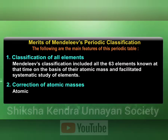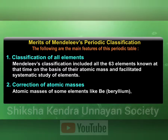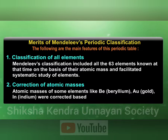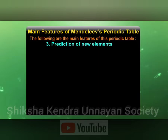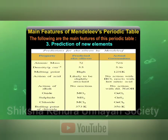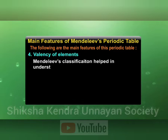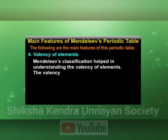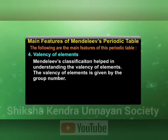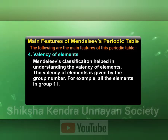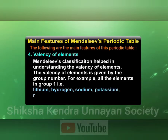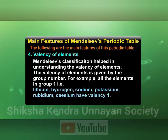Correction of atomic masses: atomic masses of some elements like beryllium, gold, and indium were corrected based on their position. Prediction of new elements: the table indicated different elements that could be new elements, representing Mendeleev's prediction of undiscovered elements. Valency of elements: Mendeleev's classification helped in understanding the valency of elements. The valency of elements is given by the group number. For example, all the elements in group 1 — helium, hydrogen, sodium, potassium, rubidium, cesium — have valency 1.